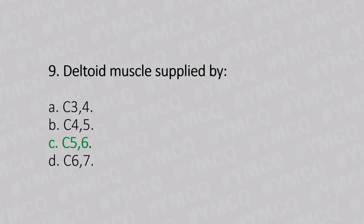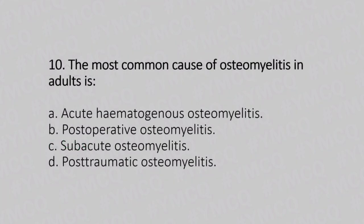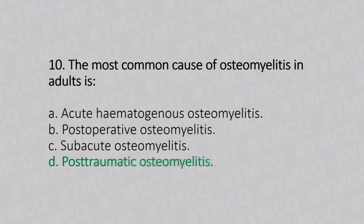Now let's move to question number 10. The most common cause of osteomyelitis in adults is. Option A: acute hematogenous osteomyelitis. Option B: postoperative osteomyelitis. Option C: subacute osteomyelitis. Option D: posttraumatic osteomyelitis. And the answer is Option D, posttraumatic osteomyelitis.